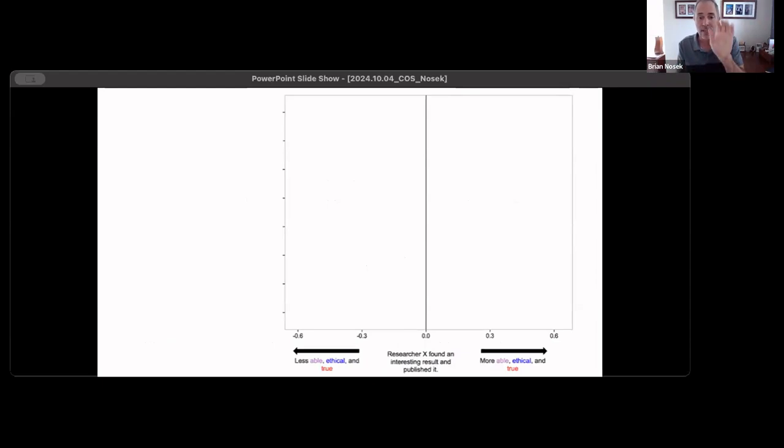Then we gave a little bit more information. I'll walk through a few examples. Researcher X found an interesting result and published it. And then you learn, additionally, researcher Y, somebody else, succeeded in replicating the finding. What you observe is that the rating of researcher X's ability and ethics goes up, increases, and the perceived truth value of the finding. This makes perfect sense, right? Somebody else independently replicated the finding. The original researcher must be pretty good, they must be pretty ethical, and their finding's probably true.